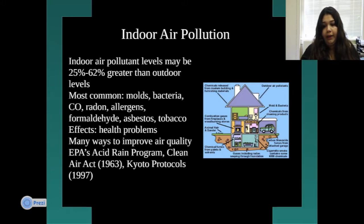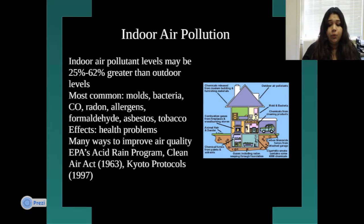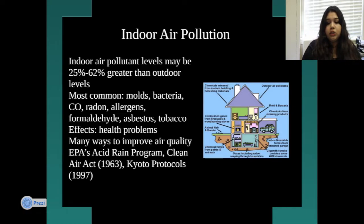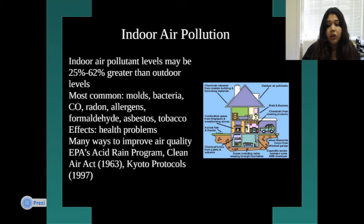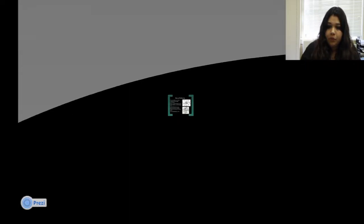There is also indoor air pollution. Indoor air pollutant levels may be 25 to 62 percent greater than outdoor levels. The most common indoor pollutants are molds, bacteria, carbon monoxide, radon, allergens, formaldehyde, asbestos, and tobacco. These give rise to many health problems. Ways to improve air quality include the EPA's Acid Rain Program, the Clean Air Act of 1963, and the Kyoto Protocol.